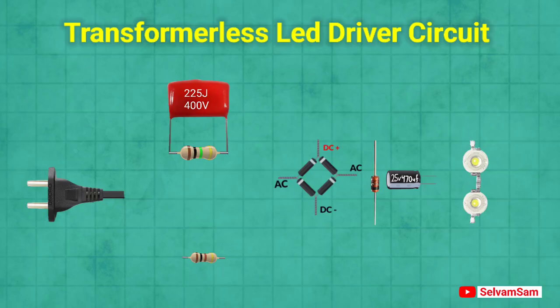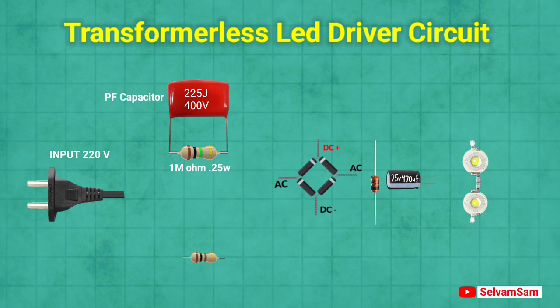In this video I'll show you a transformerless LED driver circuit. First we need 220 volt input supply, then connect a 1 mega ohm resistor with a 400 volt capacitor and a 100 ohm resistor.